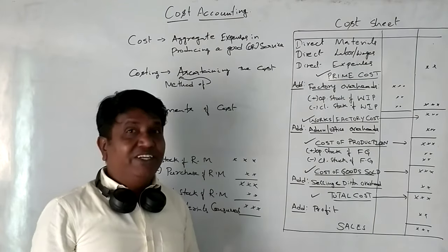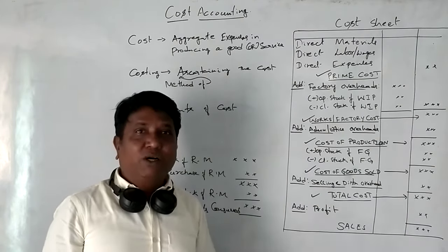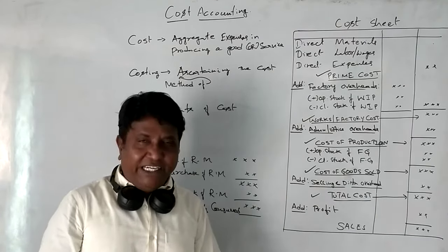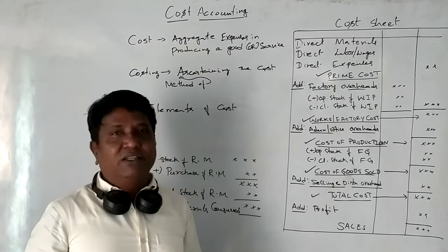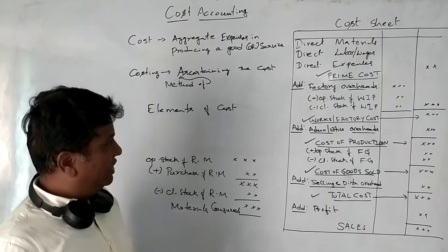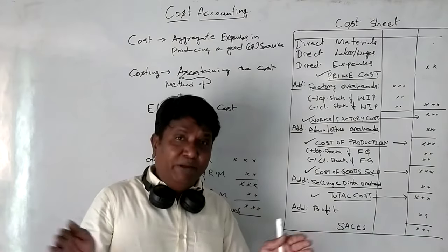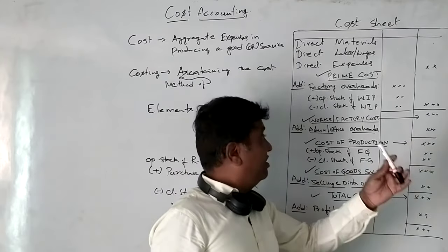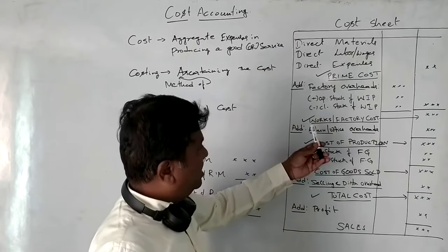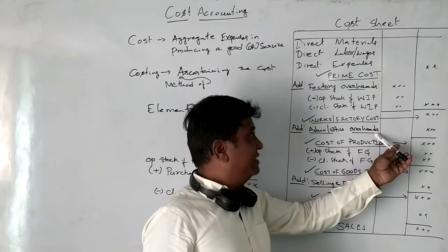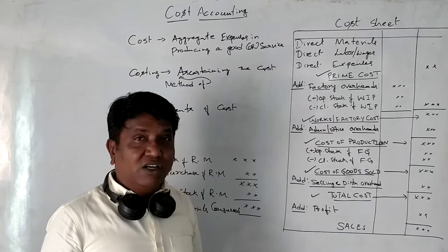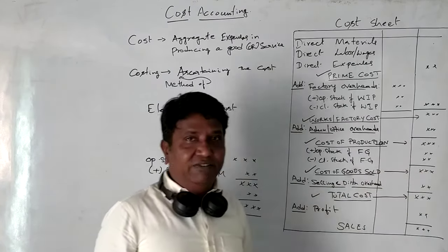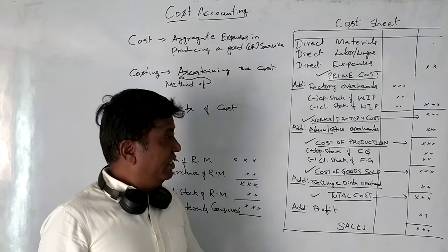After Works Cost, we add administration and office establishment expenses — such as office furniture and all office overheads — to arrive at the Cost of Production.